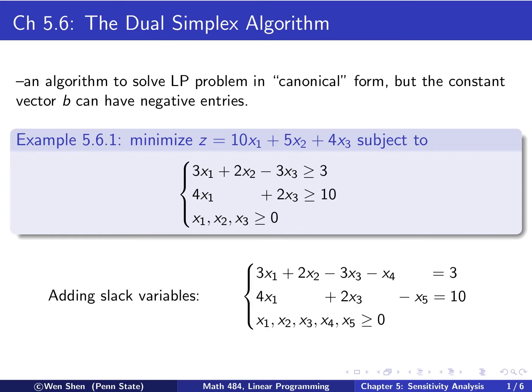We can add slack variables to make this a standard form. Since both constraints have a greater-than-or-equal sign, we introduce x4 for the first constraint and x5 for the second one. Because of the greater-than-or-equal sign, we get minus x4 and minus x5, one each for each constraint.